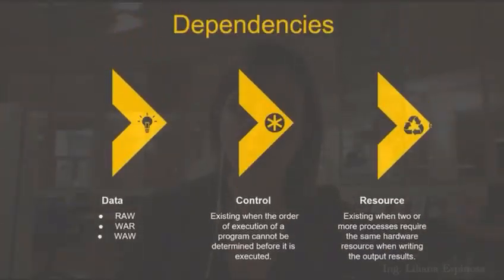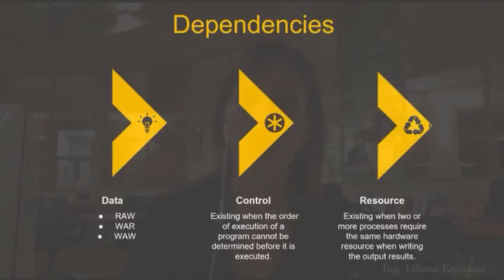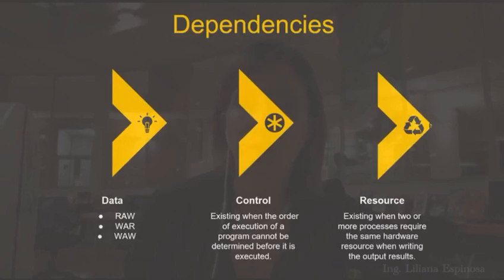We need to take care of the controls to understand and to define the order of execution of every single instruction. The last one — resource dependency or name dependency — is when two or more instructions are trying to access the same resource, the same name, or the same register.